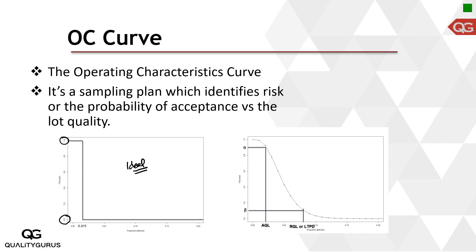Poor lots get rejected, good lots get accepted — that's the ideal case. But in reality there are errors. Type 1 error is also called alpha, or the producer's risk, because a good lot will get rejected. Type 2 error is called beta, or the consumer's risk — the risk that you might accept a bad lot. These errors happen because acceptance sampling is probability-based.